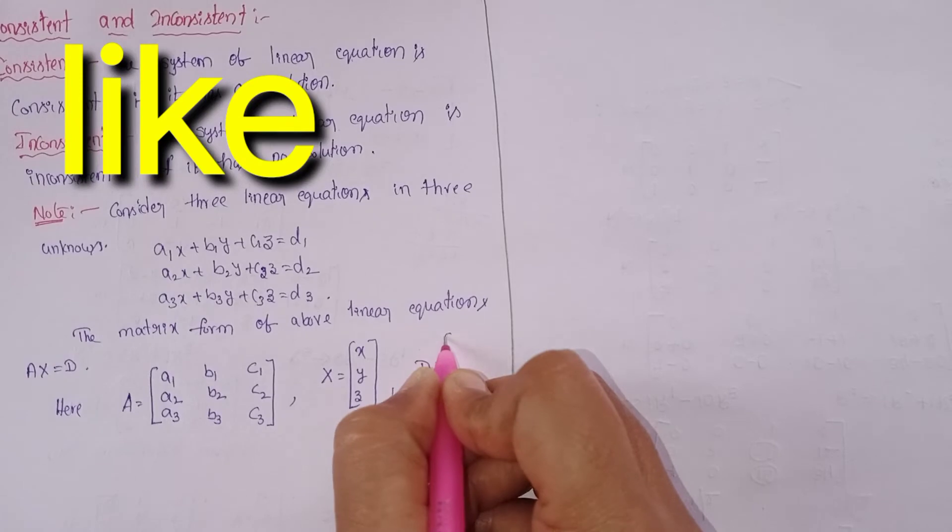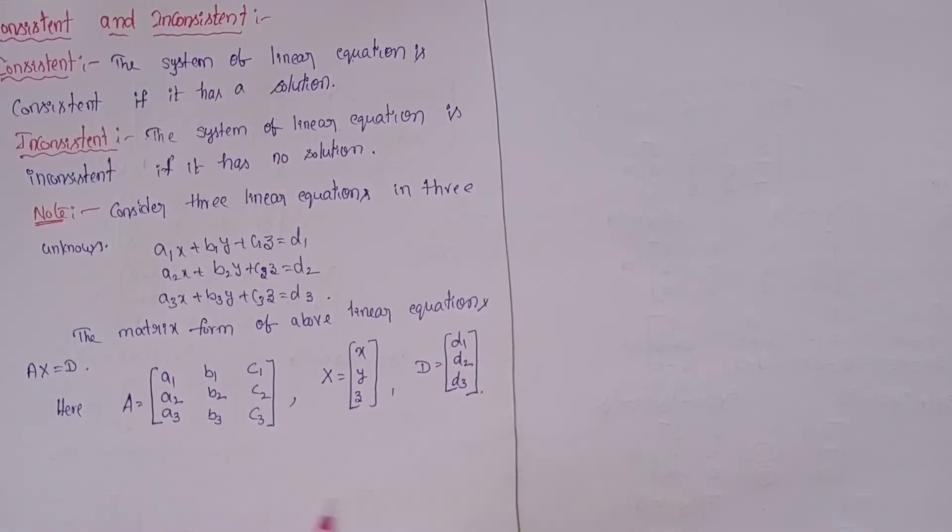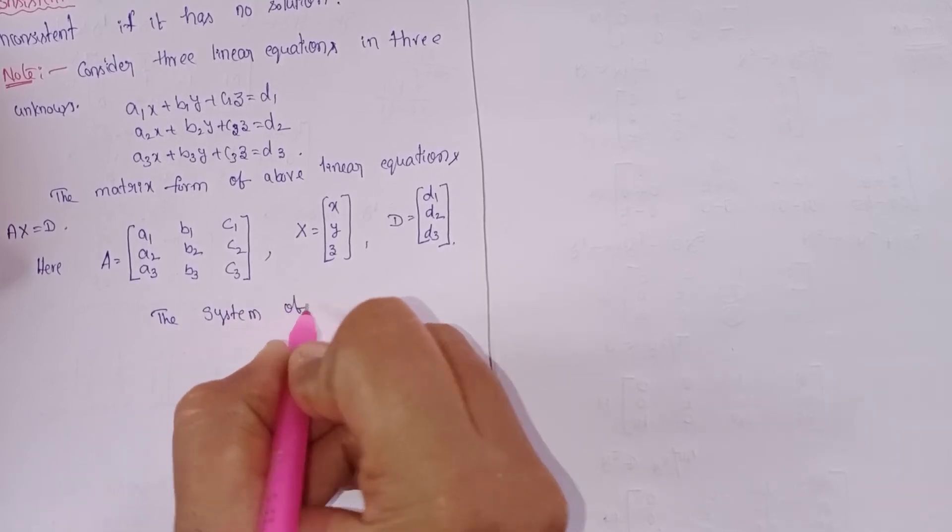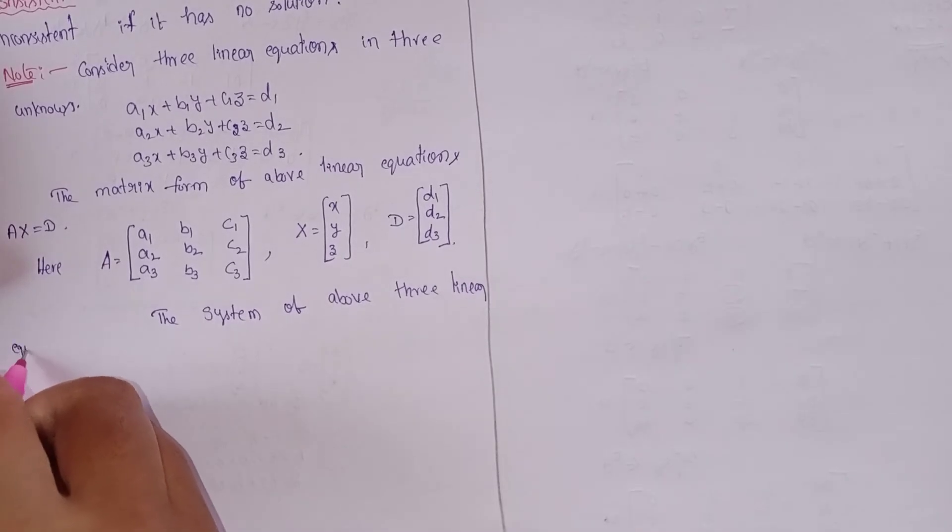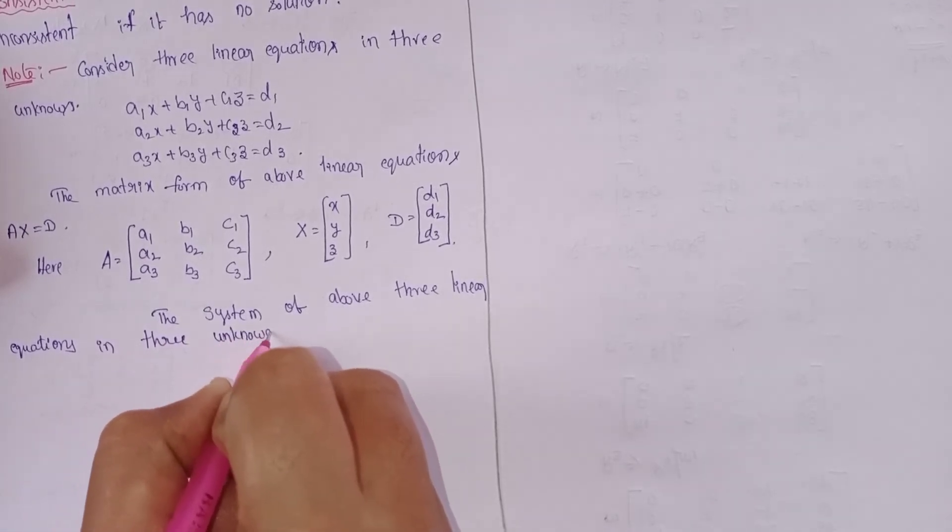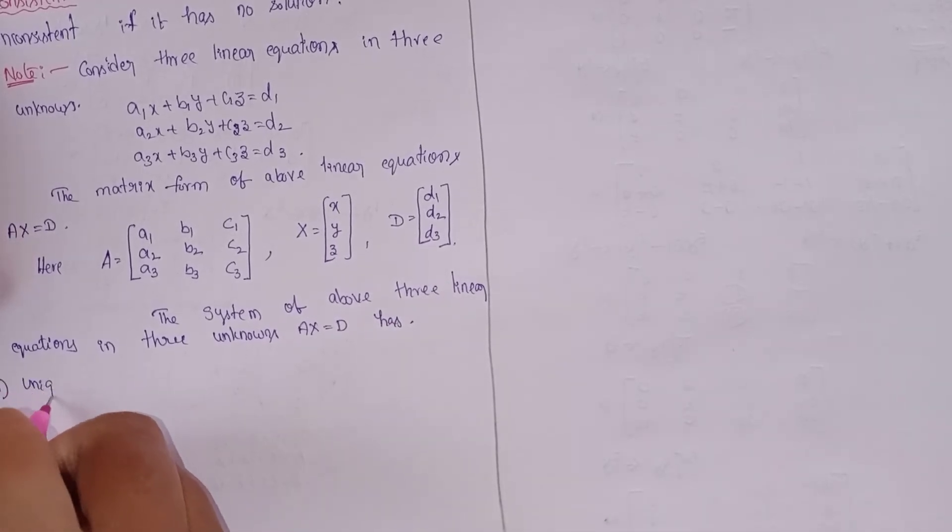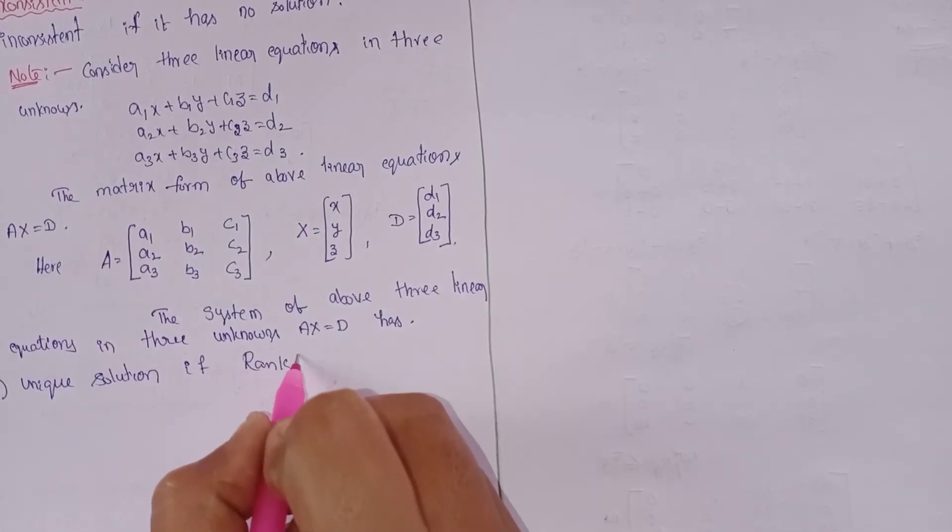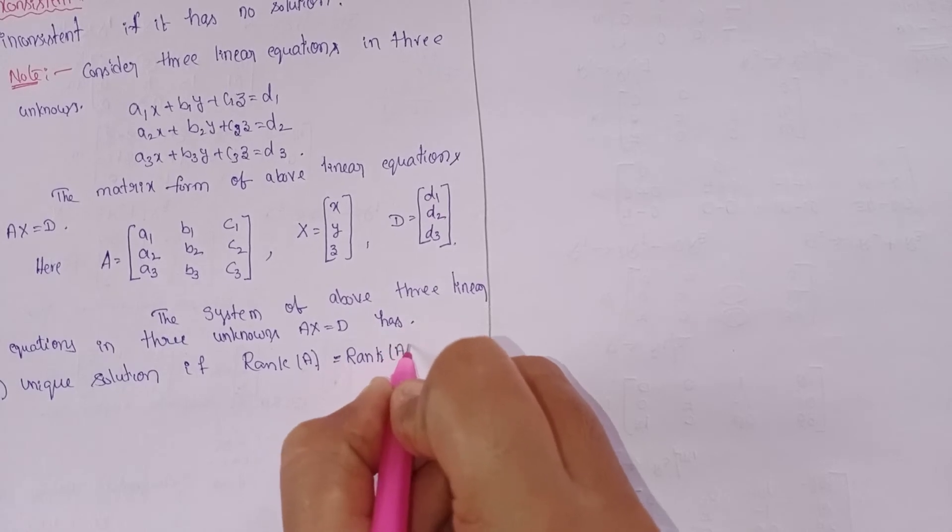Next, the system of three linear equations in three unknowns AX = D has: first point, unique solution if rank A is equal to rank of (A, D), that is three.